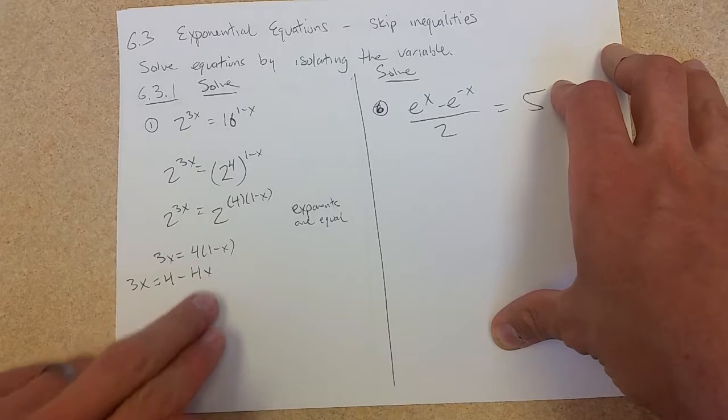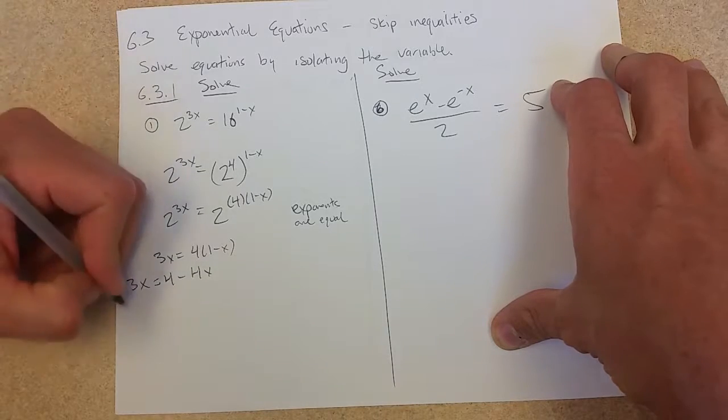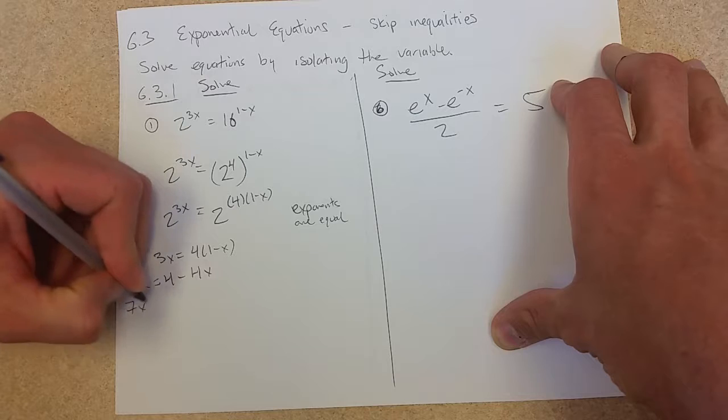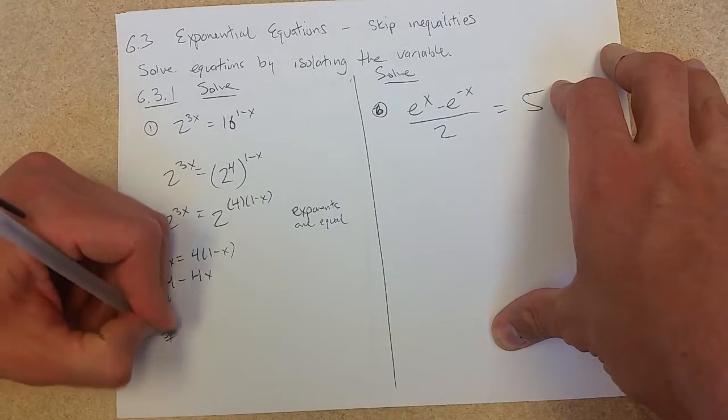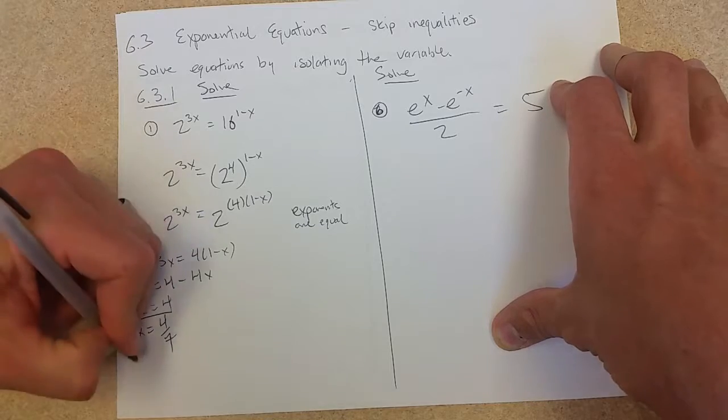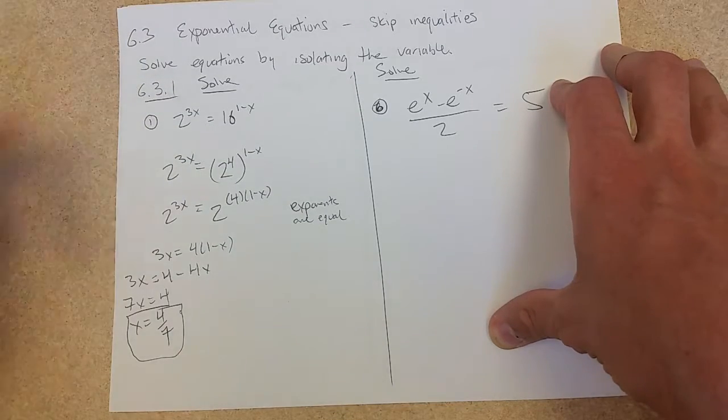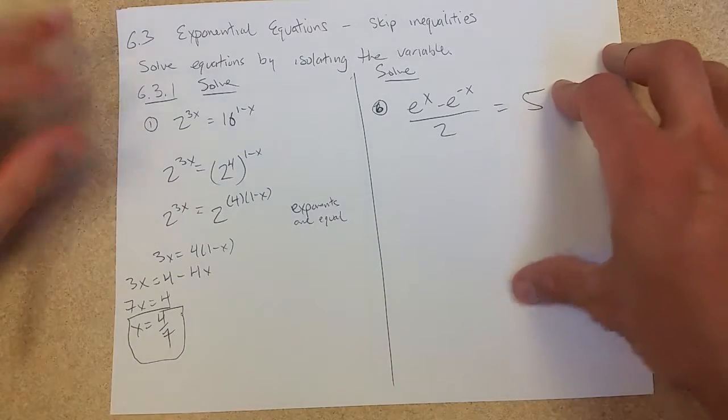That would be 4 minus 4x. We'll add our 4x to the other side. 3 plus 4, 7x equals 4. X equals 4/7. And there we go. So that is our solution.